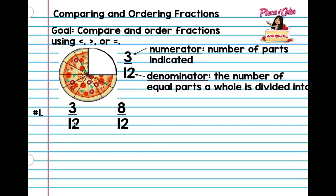Let's start with the easy ones. Last year you guys compared fractions with like denominators. So if you have two denominators that are the same, you just look at which one's bigger. Clearly, eight is bigger. It always eats the bigger number — so three twelfths is less than eight twelfths. Simple review.